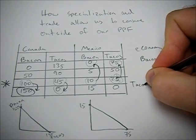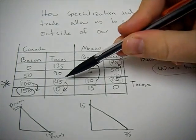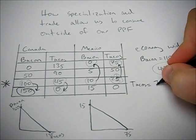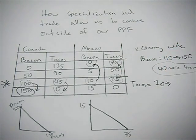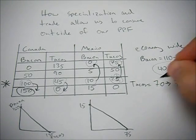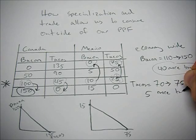Before for tacos, we had 25 tacos plus 45 tacos, so that gave us 70. After specialization, we have 75, so we have 5 more tacos.